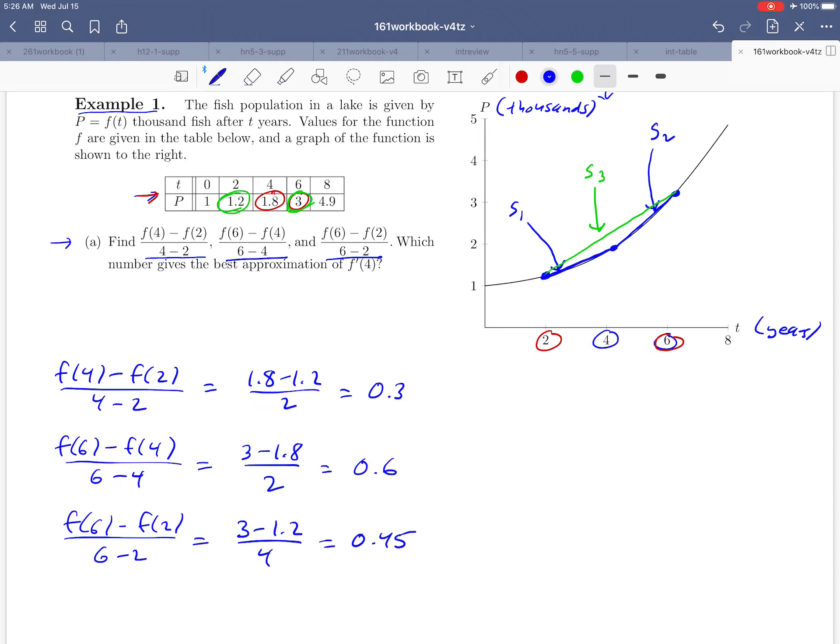And maybe it would help here just to remind ourselves which number goes with which line. So why don't we write in here 0.3 was the slope of S1, 0.6 was the slope of S2, and then 0.45 was the slope of S3, just so we can tell those three lines apart.